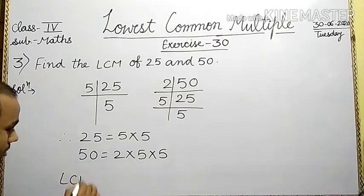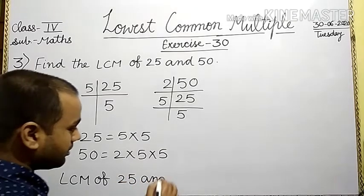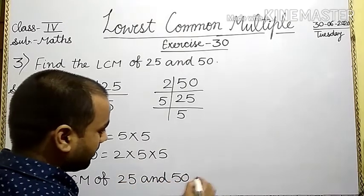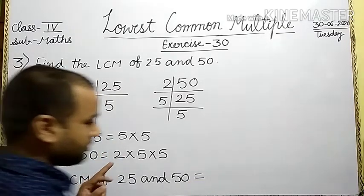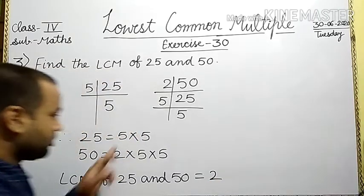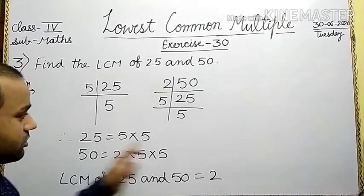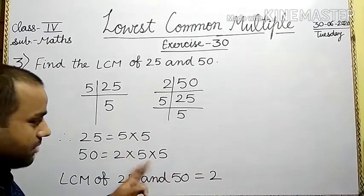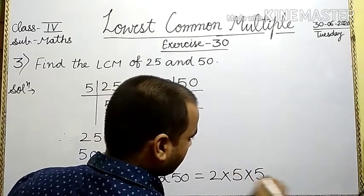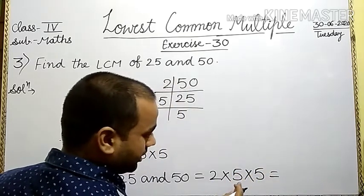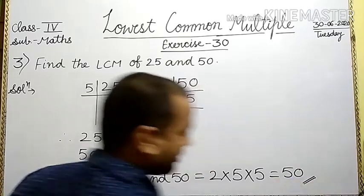The LCM of 25 and 50. Which numbers occur here? 2 and 5. First write 2: 2 occurs 1 time. 5 occurs 2 times, so maximum 2 times — write 5 two times. 2 times 5 times 5: 2 facts are 10, 10 facts are 50. This is your required answer. Is it clear?